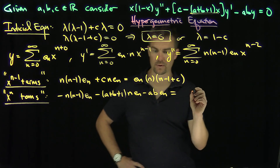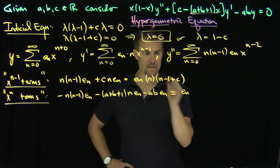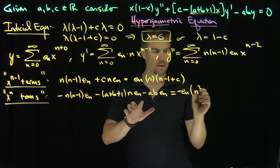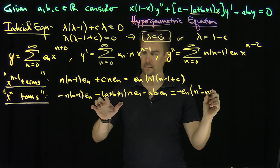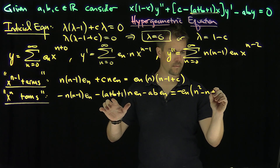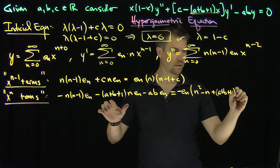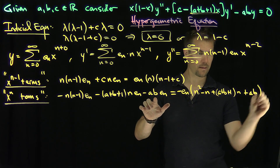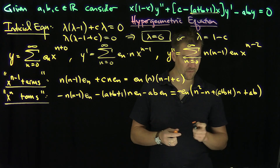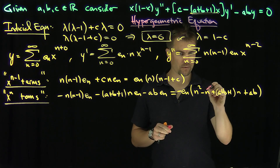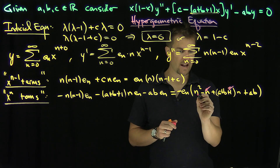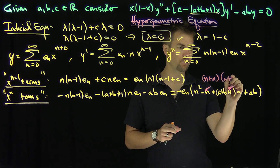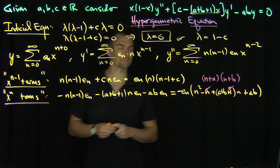If we factor this out, we have negative e_n times (n plus a)(n plus b). Notice the negative n and positive n cancel, leaving n squared plus (a plus b)n plus ab, which factors exactly as (n plus a)(n plus b). So now we have a recursion relationship for our coefficients. These are the n minus 1 terms, and shifting the index of summation from n equals 0 to n equals 1 aligns both series. The second series also effectively starts at n equals 1.